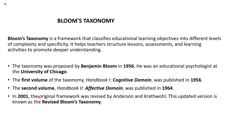The second volume, Handbook 2, covering the affective domain, was published in 1964. In 2001, the original framework was revised by Anderson and Krathwohl. This updated version is known as the Revised Bloom's Taxonomy.